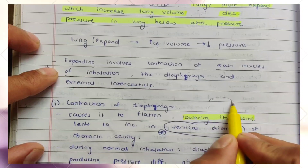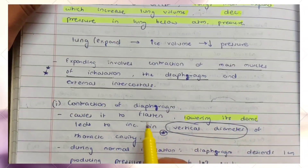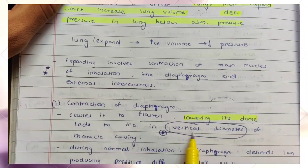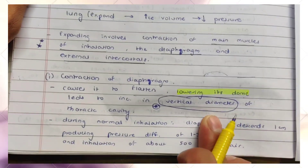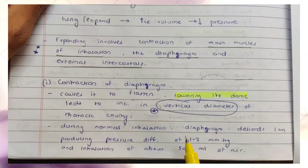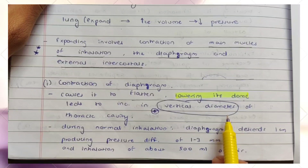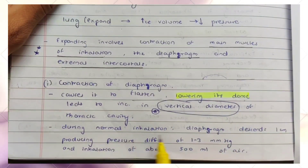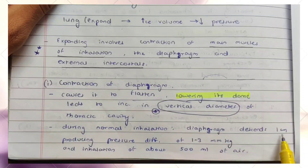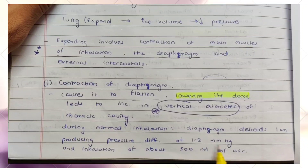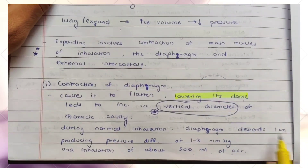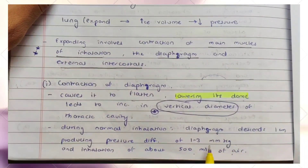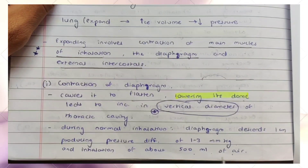When the diaphragm contracts and flattens, it leads to an increase in the vertical diameter of the thoracic cavity. During normal inhalation, the diaphragm descends about 1 cm, producing a pressure difference of 1–3 mmHg. This pressure difference results in inhalation of approximately 500 ml of air.